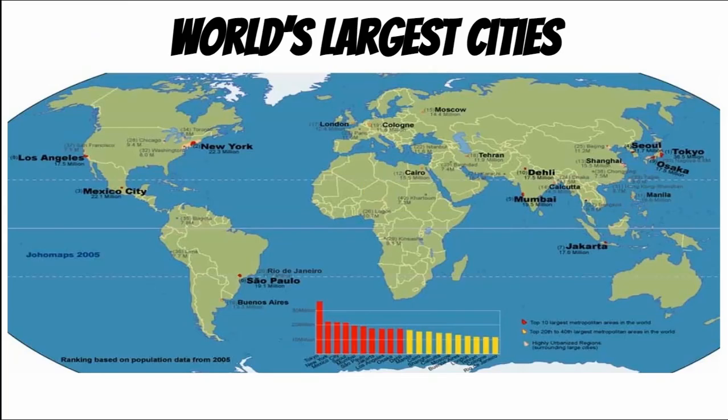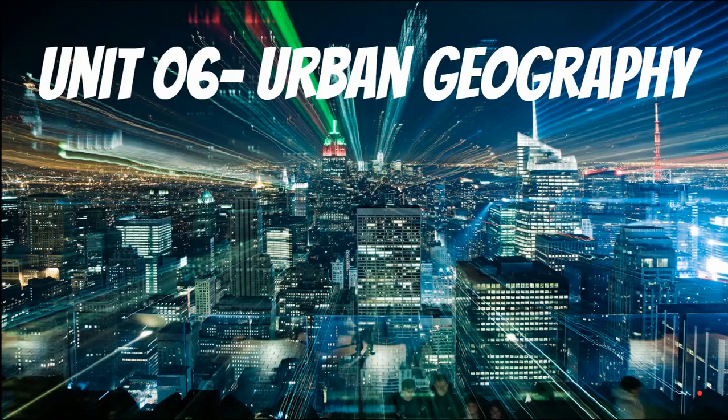Today, you can see the biggest cities in the world are located here. You'll notice most of them are on coasts — people like to live on bodies of water and coasts. A lot are in East Asia and Southeast Asia, so they have most of the large cities. But let's keep looking at some of these terms.